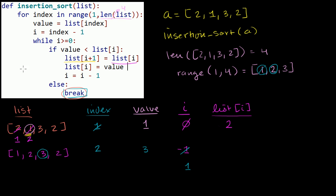That makes sense — we compared 3 immediately to the thing right before it to the left, and said 3 is in the right place: 3 is greater than 2, not less than 2. So there's no need for any shifting. Since everything to the left is already sorted, if 3 is not less than 2 it's definitely not going to be less than anything to the left. So we break out and go to the next iteration of the for loop.